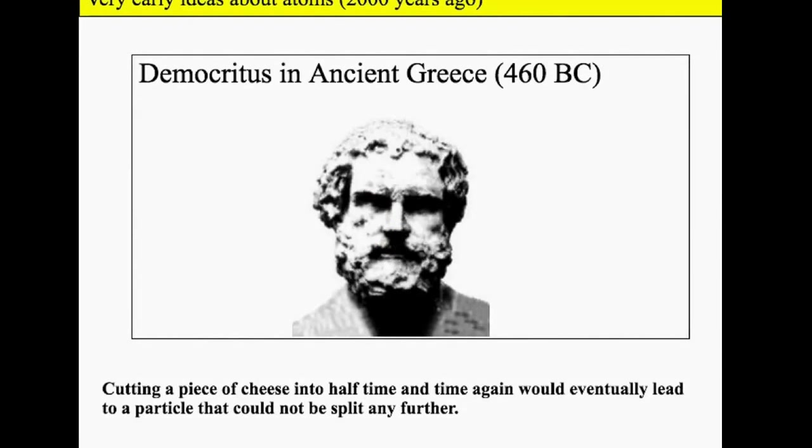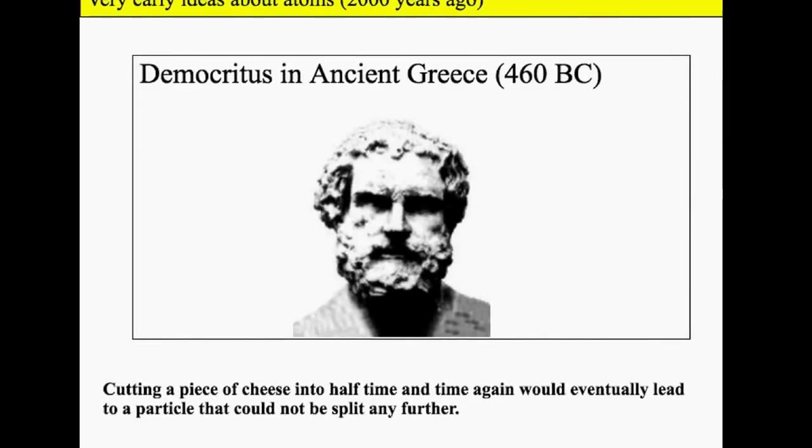We're going to briefly talk about the history of ideas about atoms. This is Democritus from ancient Greece around 460 BC. He had the idea that if you got a bit of cheese and kept cutting it in half again and again, eventually you'd lead to a particle that couldn't be split any further, and this would be the atom.